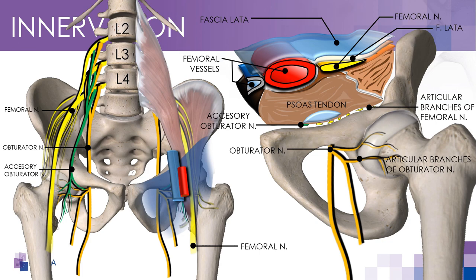The intrapelvic pathway of the femoral nerve involves its descent along the psoas muscle and passage under the inguinal ligament before entering the anterior compartment of the thigh. The most recent articles describe articular branches that descend to the articular capsule and separate from the nerve itself shortly after its formation. At the inguinal level, these articular branches would be situated below the psoas muscle and its tendon.